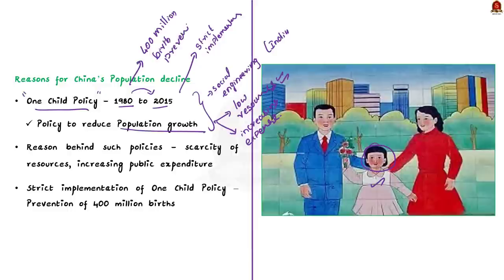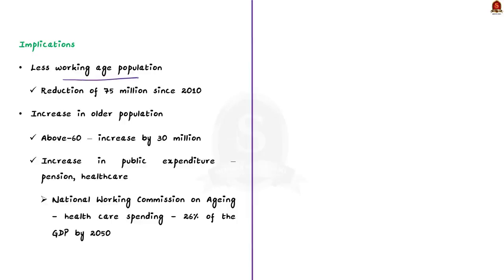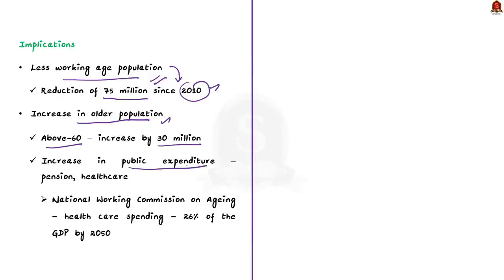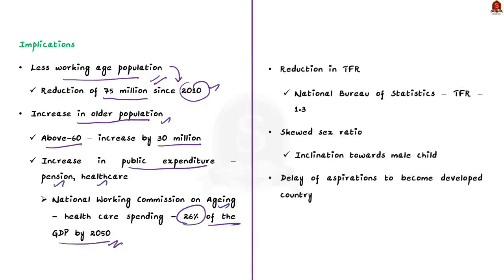What are the implications of the reduction of Chinese population? Lower birth rate means a lower percentage of the population will be in the working age group. So China will not have the benefit of demographic dividend. As per data, a decline of around 75 million since 2010 has been observed in the working age group in China. Secondly, population reduction measures increase the percentage of older population. The above-60 population has increased by 30 million in China, directly affecting public expenditure — the geriatric community must be provided with pension schemes, health benefits, and old age homes. As per China's National Working Commission on Aging, spending on healthcare for the elderly will increase to 26% of its GDP by 2050.